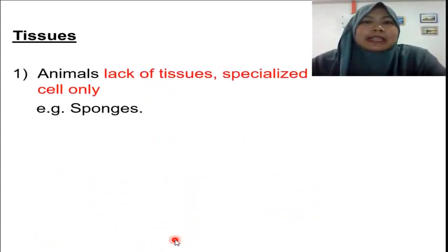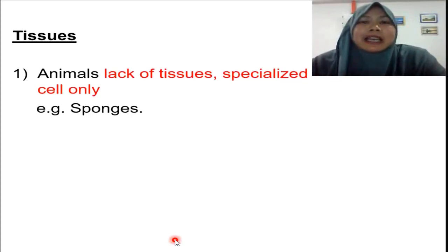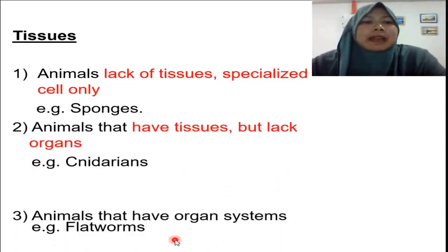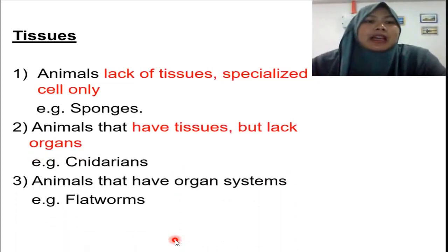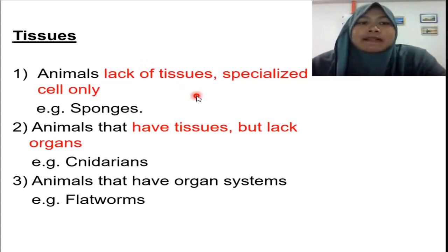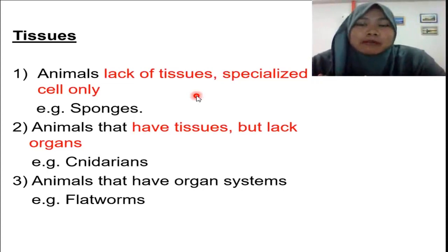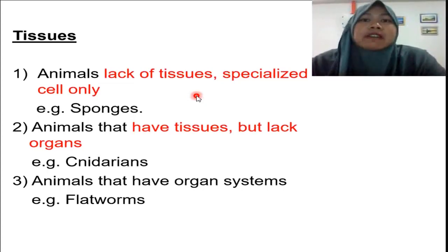Next, we go to another characteristic that categorizes animals in the animal kingdom, which is tissue. Some animals are lacking tissue, meaning they are just made of specialized cells. These are the sponges, which lie in the first phylum of the animal kingdom, the phylum Porifera.